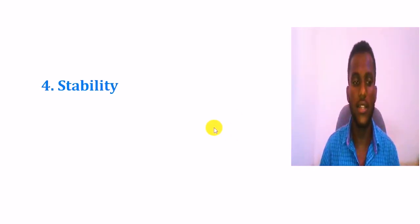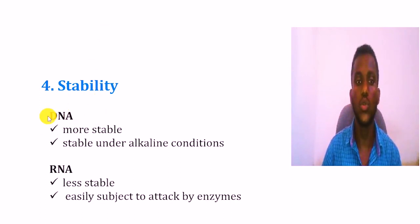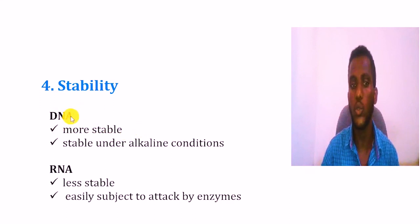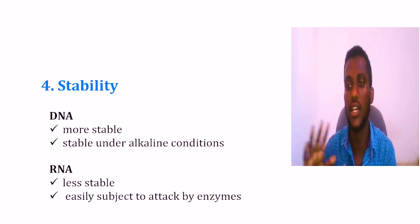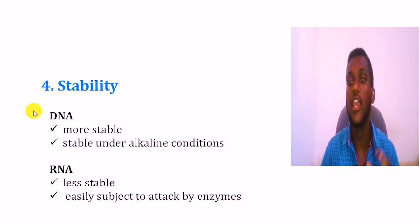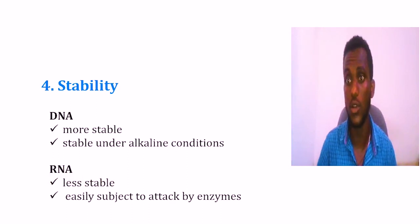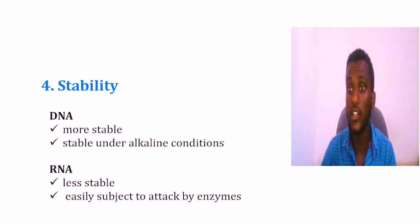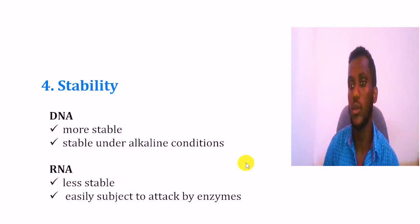Based on stability: the deoxyribose sugar in DNA makes DNA more stable. DNA is even stable under alkaline conditions when pH is greater than seven. In the case of RNA, the ribose sugar contains the additional oxygen, which is reactive, making RNA less stable and more easily subject to enzyme hydrolysis.